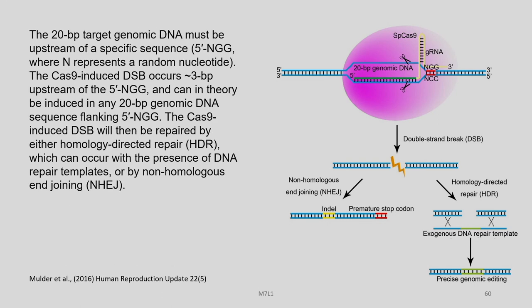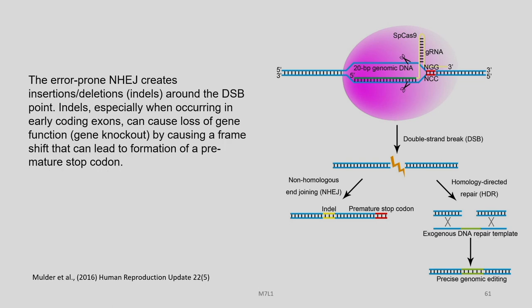The 20-base-pair target genomic DNA must be upstream of the 5-prime NGG PAM sequence, where N represents a random nucleotide. The Cas9-induced DSB occurs about 3 base pairs upstream of the 5-prime NGG and can in theory be induced in any 20-base-pair genomic DNA flanking sequence. The Cas9-induced DSB will then be repaired by either homology-directed repair (HDR), which can occur with the presence of a DNA repair template, or by non-homologous end joining (NHEJ). The error-prone NHEJ creates insertions and deletions (indels) around the DSB point, and when occurring in early coding exons can cause loss of gene function or gene knockout by causing a frameshift that can lead to formation of a premature stop codon.